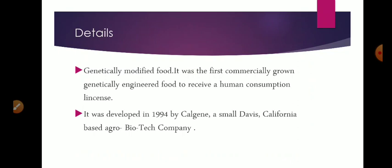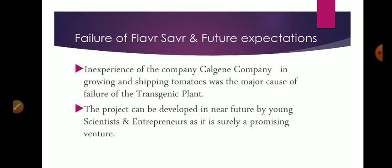Here are the details about this Flavr Savr tomato. It was developed in 1994 by Calgene and it was the first food to get license for human consumption. What led to the failure was inexperience of the company. Calgene was a very new company and it could not help itself growing and shipping tomatoes. That's why the project failed, but the project was very fruitful and it is very promising and it must be carried over in near future also. Thank you.